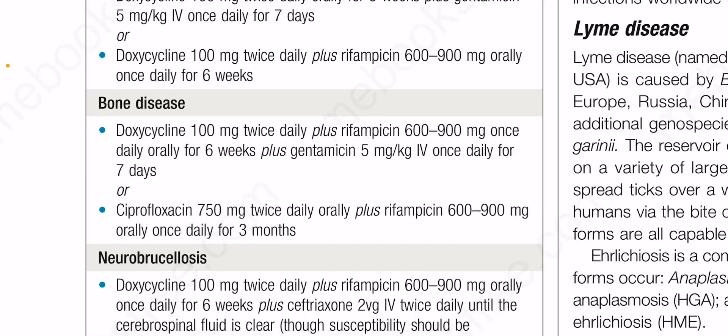For bone disease: doxycycline 100 mg twice daily plus rifampicin 600 to 900 mg orally once daily for three months.